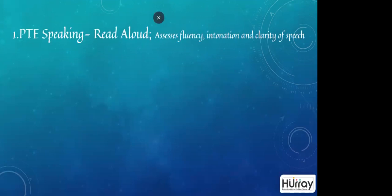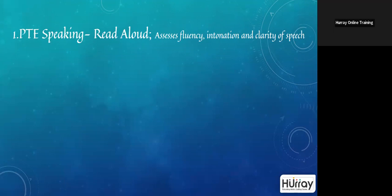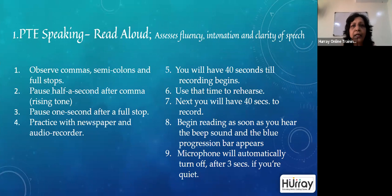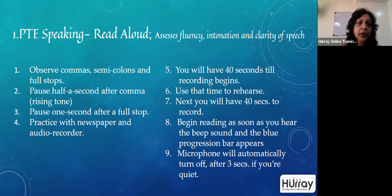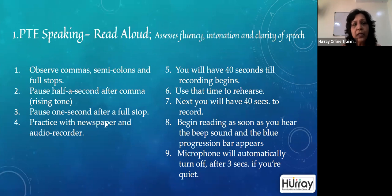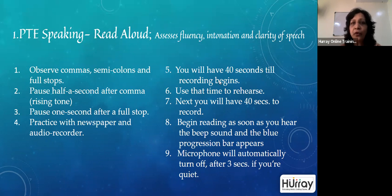The first question type in speaking is Read Aloud, which assesses your fluency, intonation, voice modulation, and clarity of speech. You can observe where commas, semicolons, and full stops are placed. Pause for about half a second after a comma with a rising tone, and pause for one second after a full stop with a falling tone. Practice by reading newspapers and recording your voice to check your rate of speech and voice modulation.